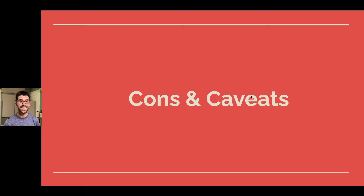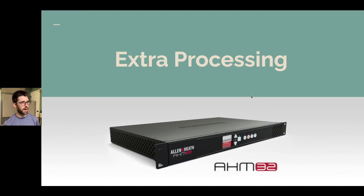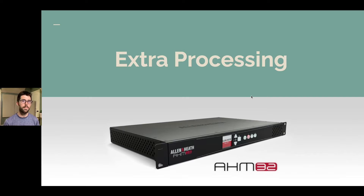Here are the cons and caveats — it's not all sunshine and rainbows. First, you're going to need extra processing. The Allen Heath HM32 just came out and looks exciting, but you need two separate outputs — both receiving the same signal — with delay and polarity inversion capability. If you're on an analog desk without digital delay lines, you're out of luck. There are also subwoofers with built-in delay and level controls now, so you need processing somewhere to make it work.